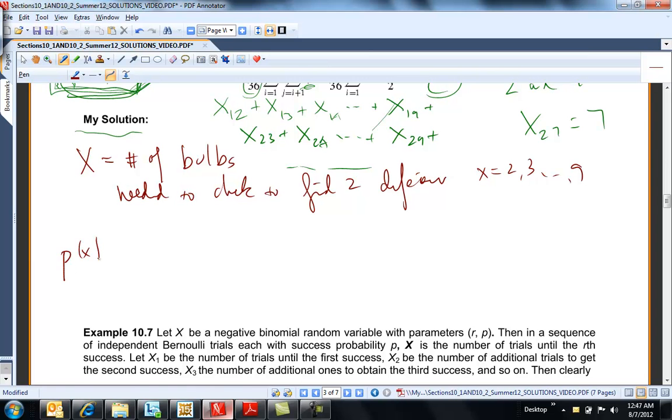So p of X is equal to... For example, the first one's easy. The probability of X is equal to 2 means you got a defective bulb, which is 2 ninths. And then you chose the other defective bulb, which is 1 eighth. So this is 1 over 36. The probability of X is 2. So that was pretty nice.